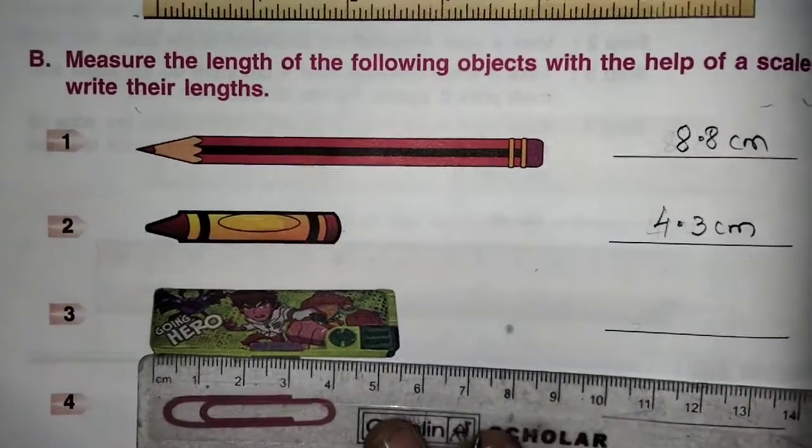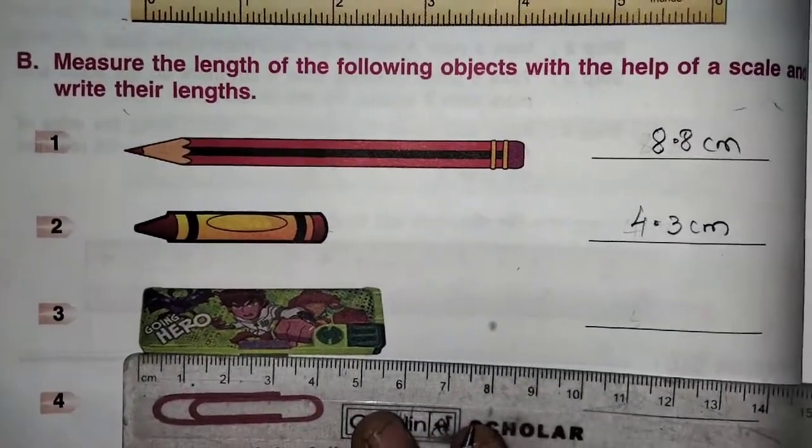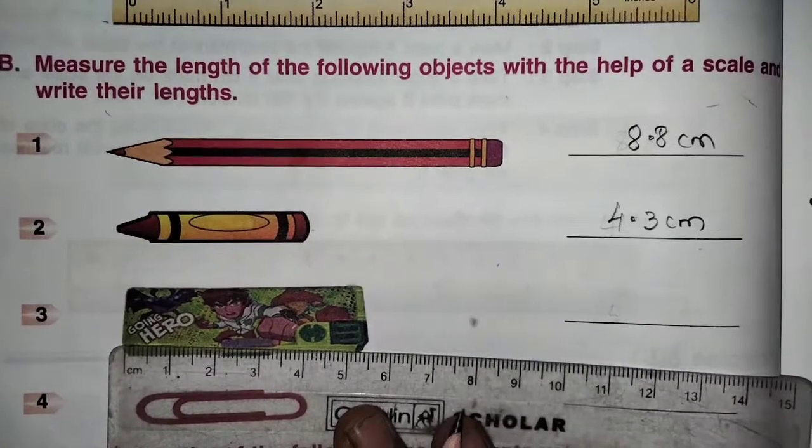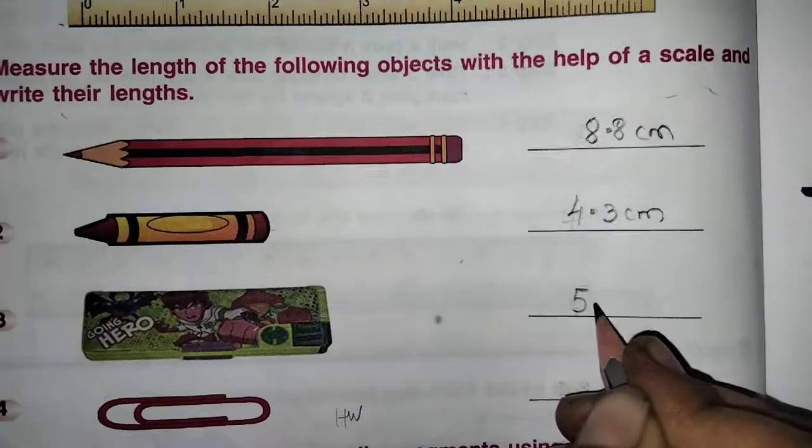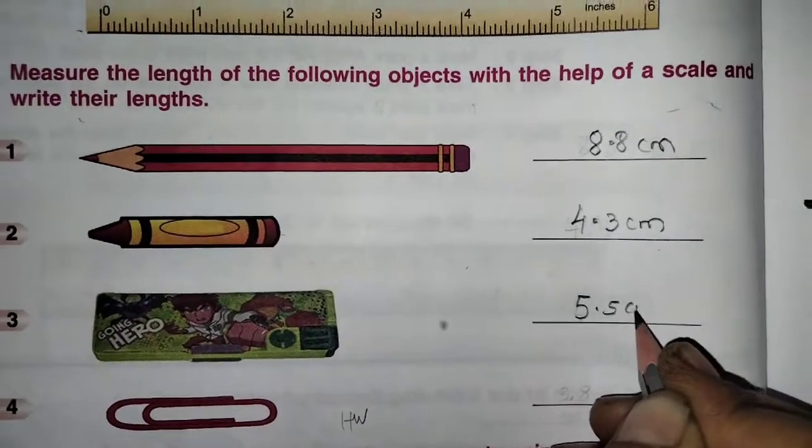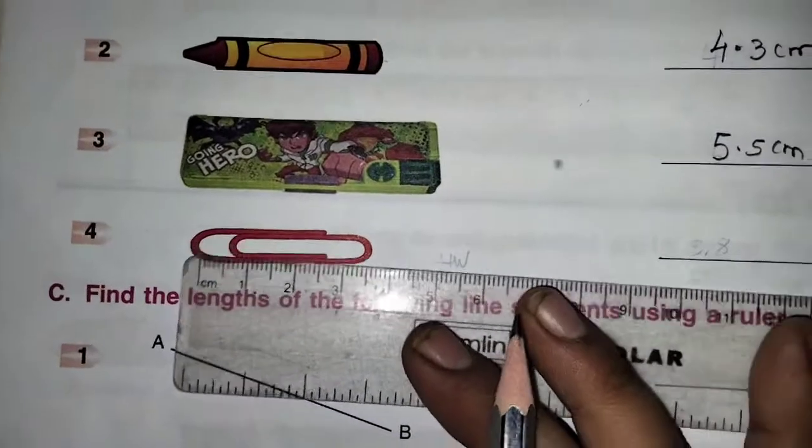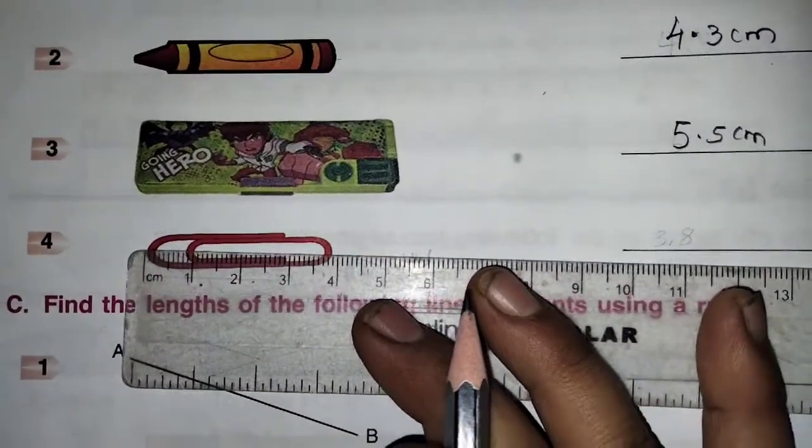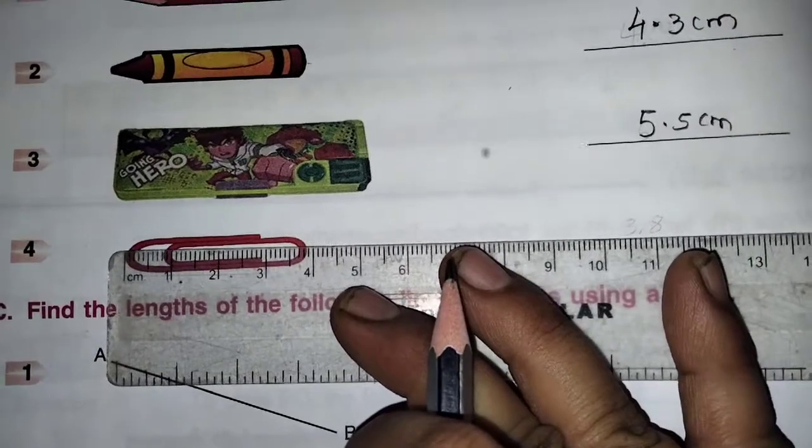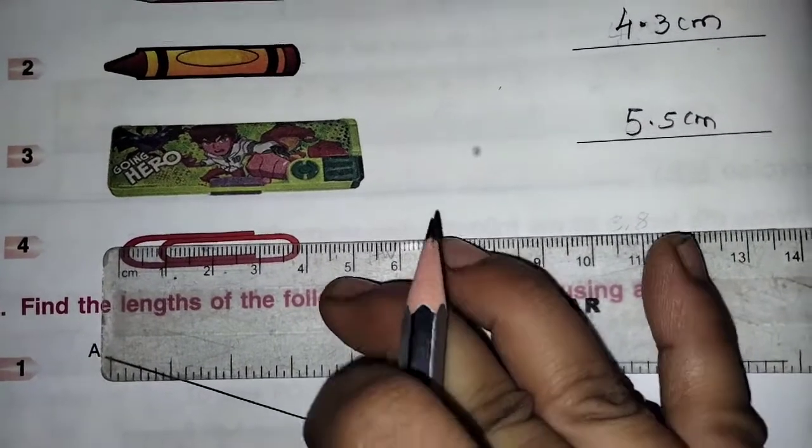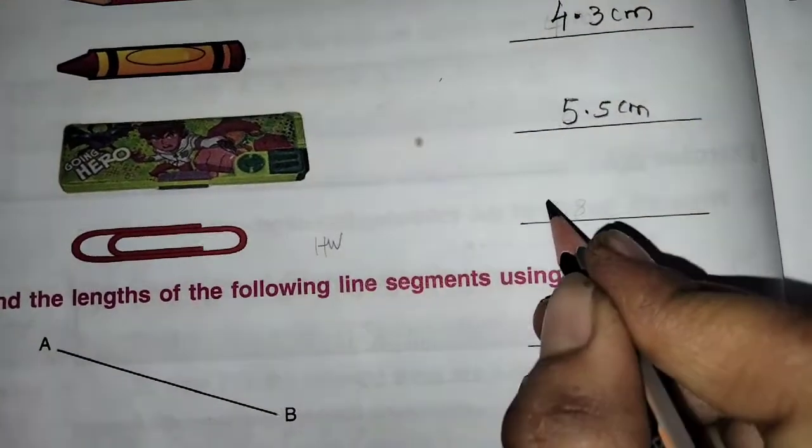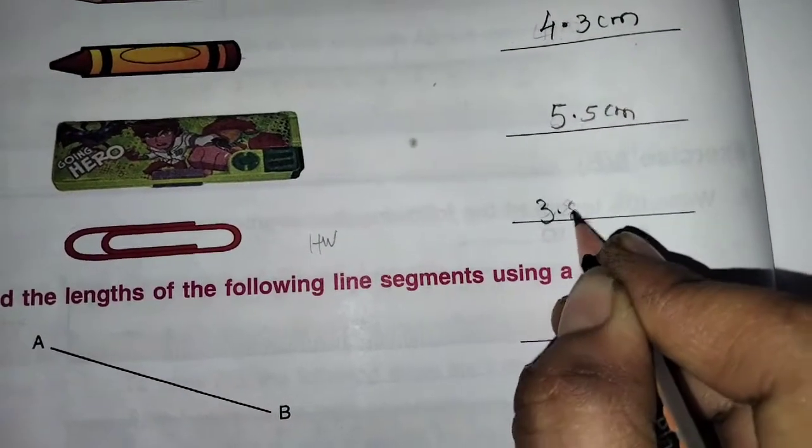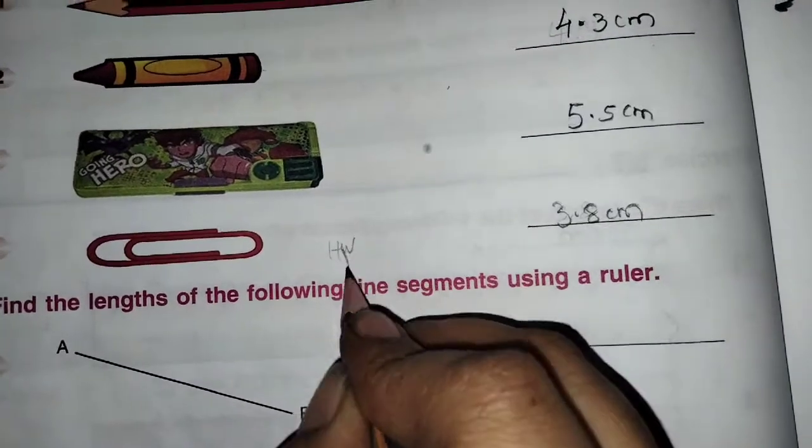Now next by the scale. One end is here, one end is this side. 5.5. Next you can count, one end is this side. One end is here, 3.8. Now this down, it is the homework.